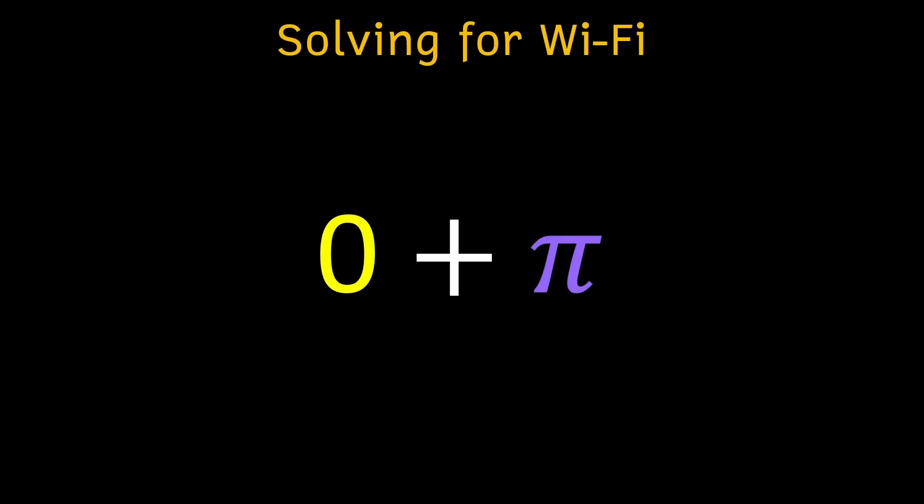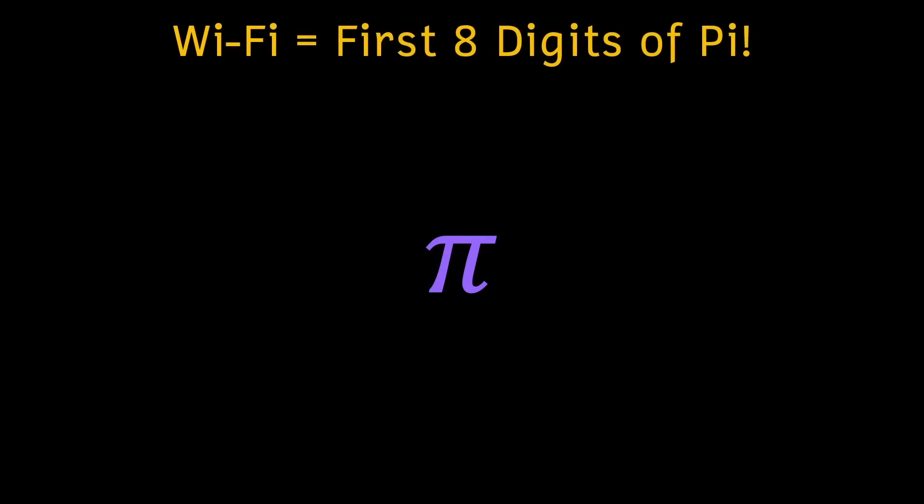So what we end up with for our final answer is zero plus pi, which is just pi. And that means the wifi password is the first eight digits of pi, which I actually don't know, so I'll have to look it up. They are 3.14159265.